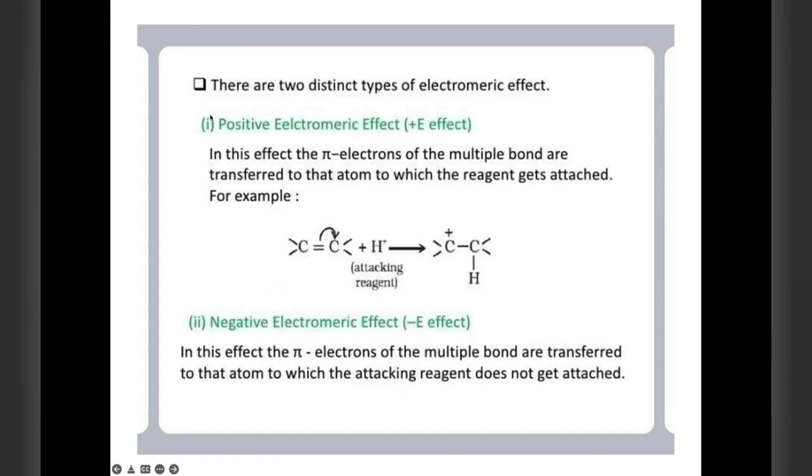We will see this in two different classifications: positive electromeric effect plus E, and negative electromeric effect E minus. In positive electromeric effect, pi electrons of the multiple bond are transferred to that atom to which the reagent gets attached. Here H+ is the attacking reagent. This carbon bond shifts to this place, and the hydrogen will get attached to this bond. This carbon atom will get slightly positive charge. In negative electromeric effect, pi electrons of the multiple bond are transferred to that atom to which the attacking reagent does not get attached. In this case, the attacking agent is not there, so here the pi bond will be transferred.